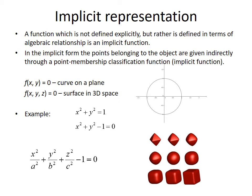Therefore, the function f(x,y) equals x squared plus y squared minus 1 is our implicit function or classification function. An example for the 3D case is represented at the bottom of this slide.